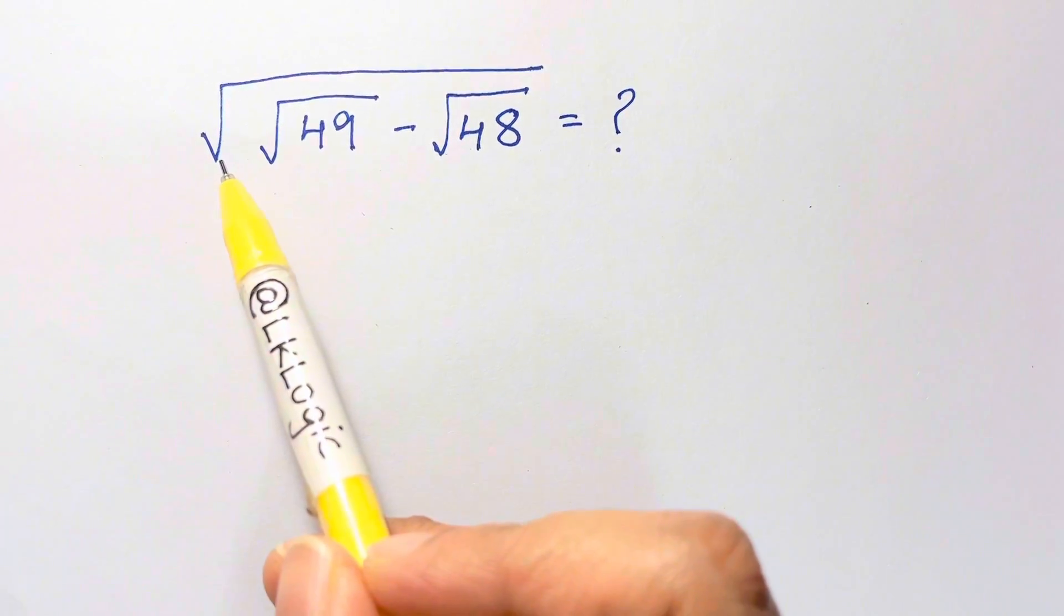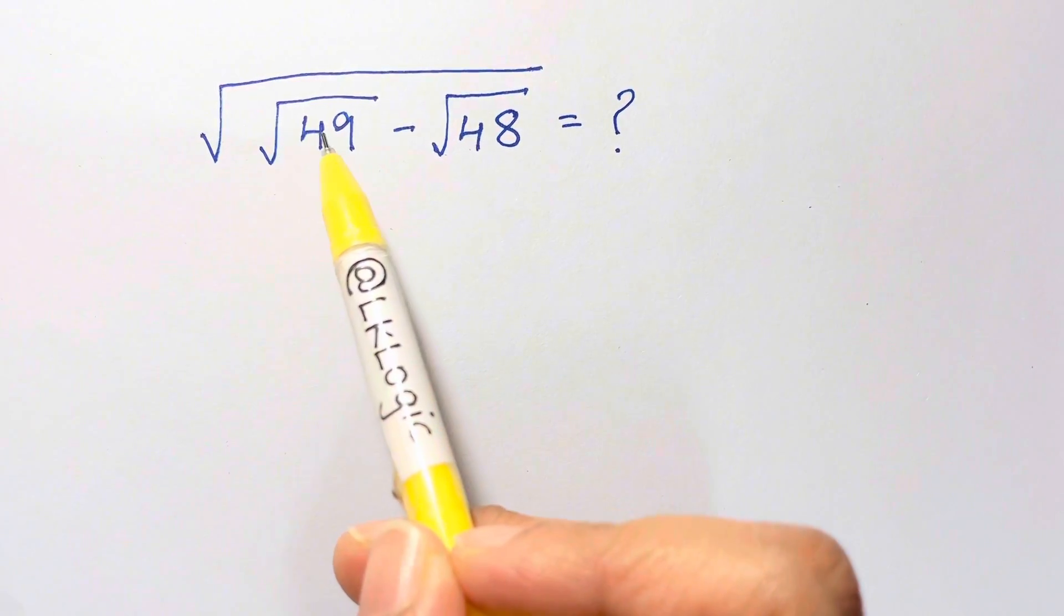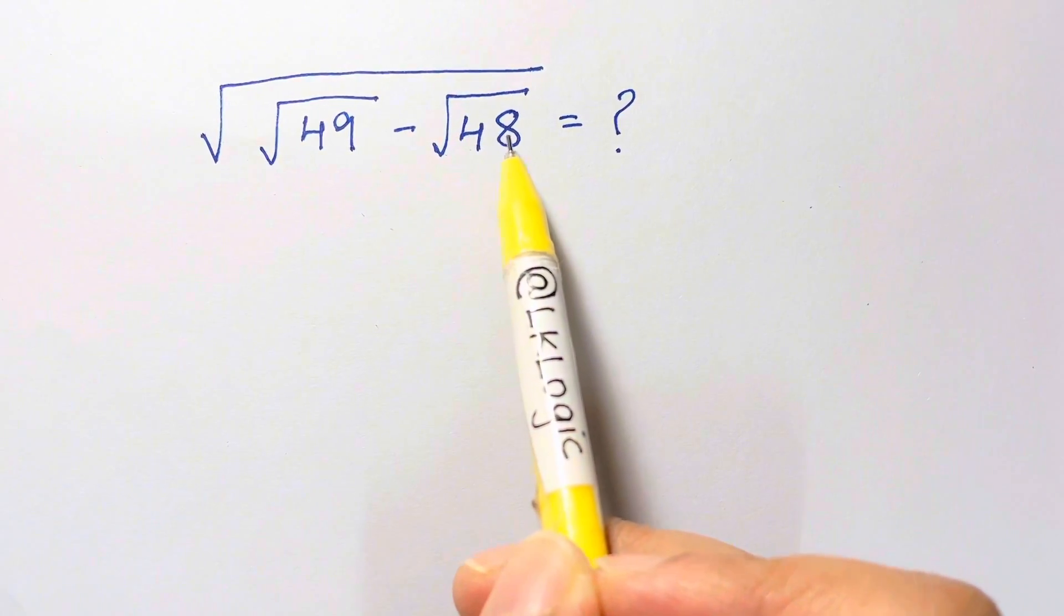Nice radical problem says square root of square root of 49 minus square root of 48 equals how much?